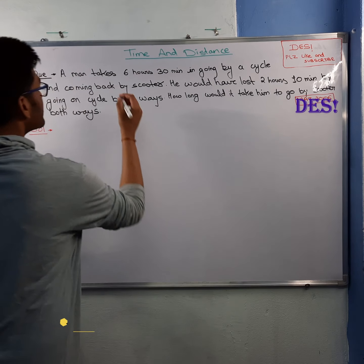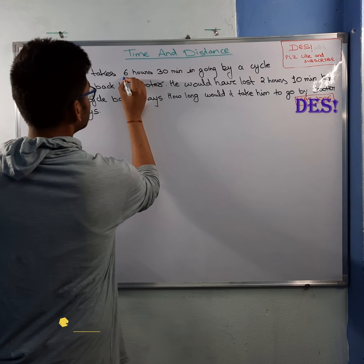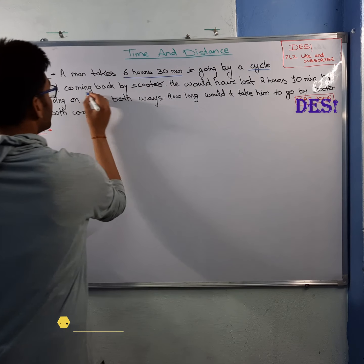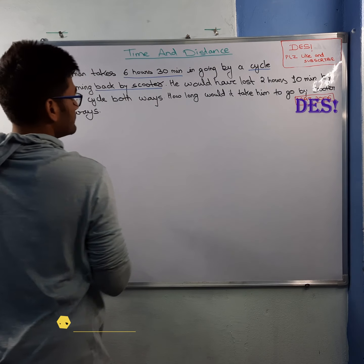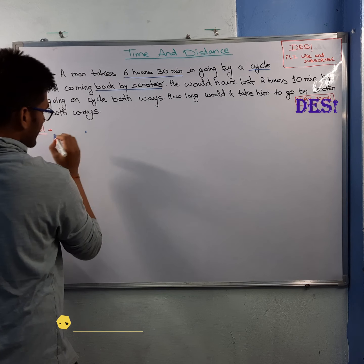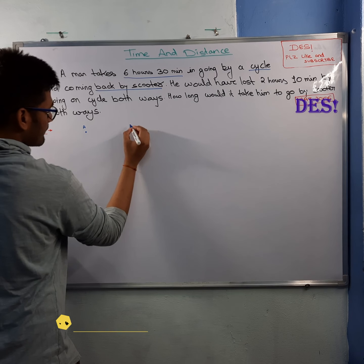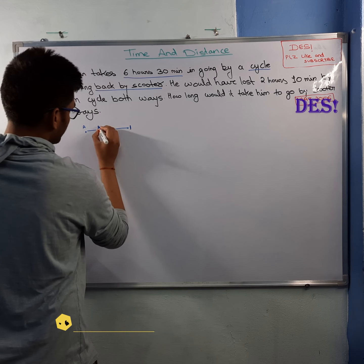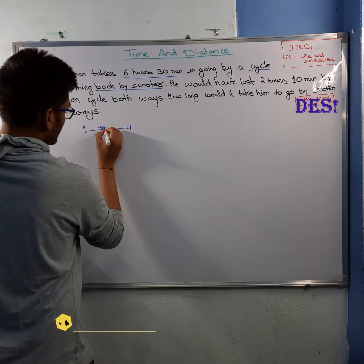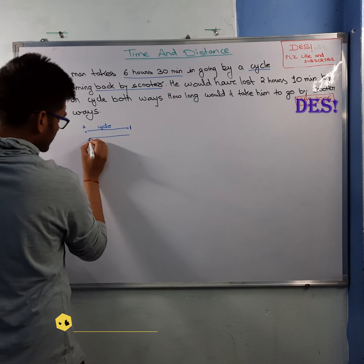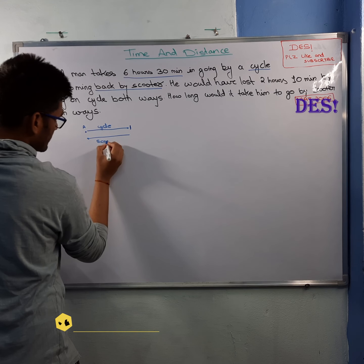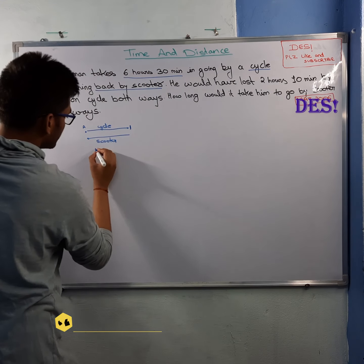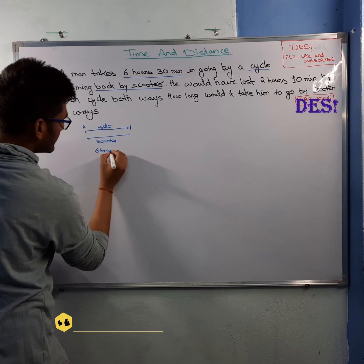What is the question saying? A man takes six hours thirty minutes by going on a cycle and coming back by scooter. That means, imagine someone is here and the office is there. If he is going by cycle and coming back by scooter, how much time does that take? Six hours thirty minutes.